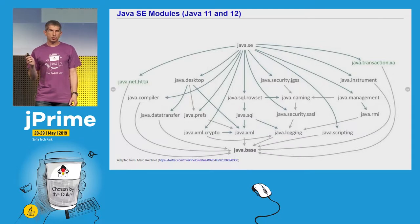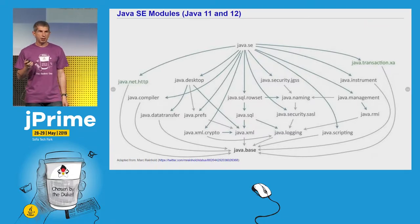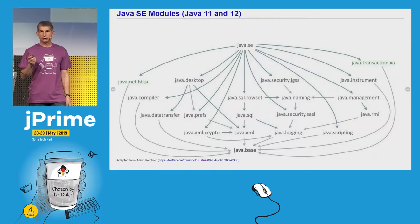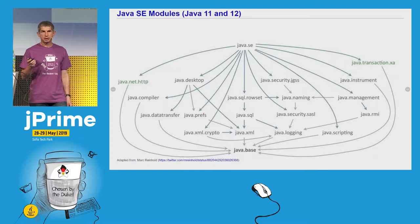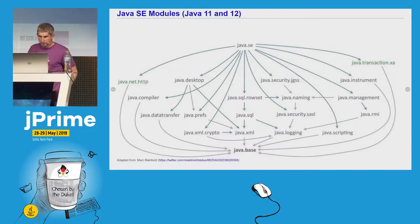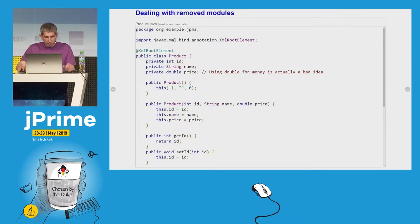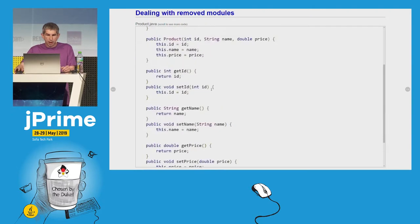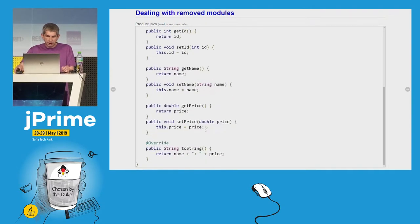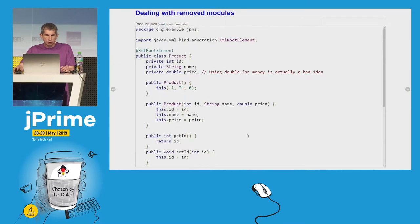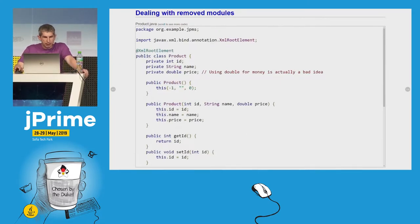Having code removed from the JDK means that even if you don't modularize your code, even if you don't make any changes to your software, you may still have problems running it on Java 11 or newer. Let's illustrate this with a simple program that prints the XML representation of an object. I have here a product class with ID, name, and price, with accessor methods, getters and setters, and a toString method. Because I want to serialize this class as XML, I also put here the XML root element annotation.